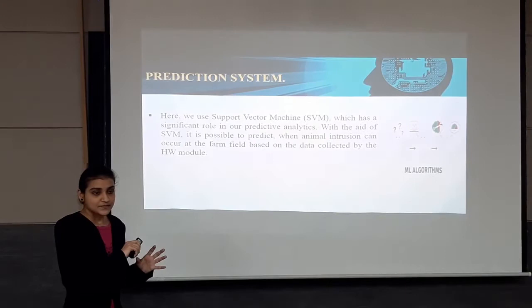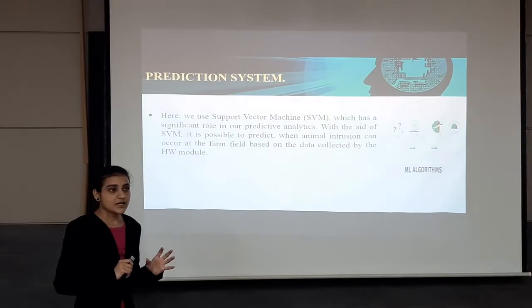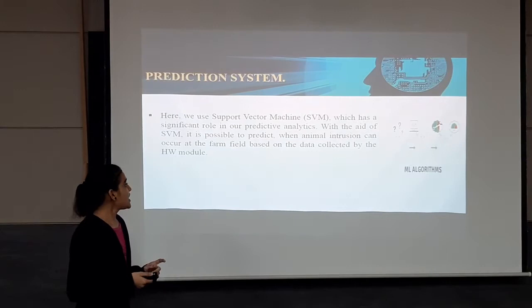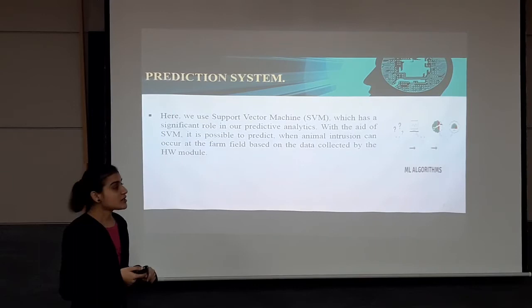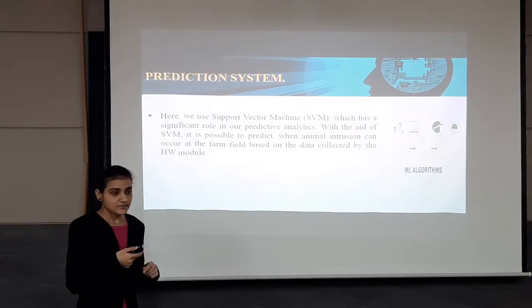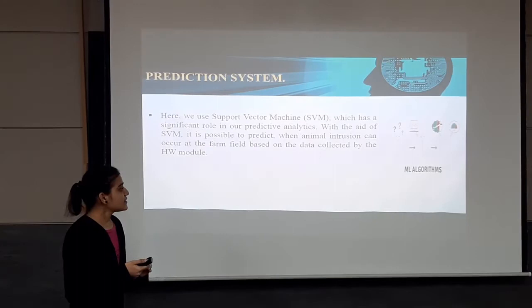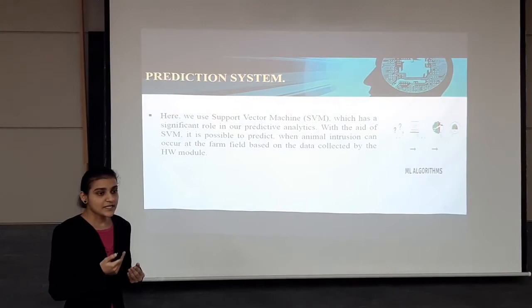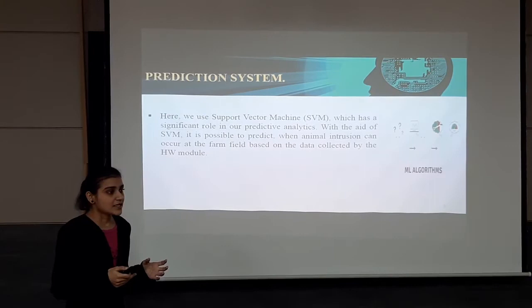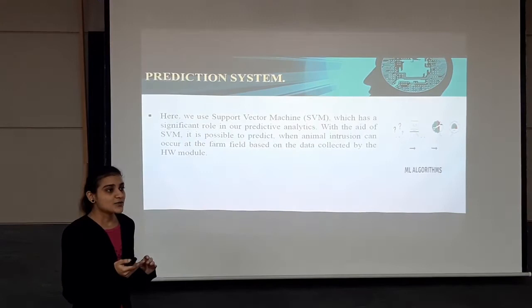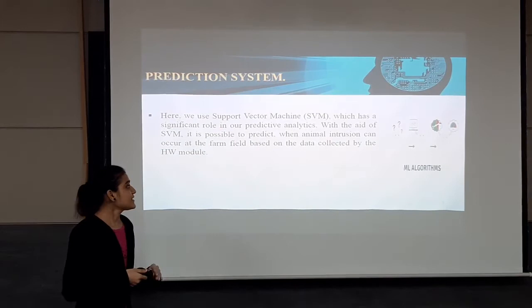The data from the cloud database is accessed by the prediction system — the server running the machine learning algorithm. We will train this large amount of data on the Support Vector Machine for our prediction system. It will generate patterns. The animal intrusion patterns will be in the form of a graph — for example, today there is a 70% chance of animal intrusion, tomorrow is 80%, shown in the form of a graph or table.